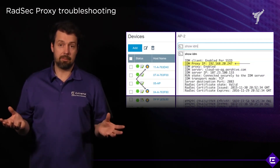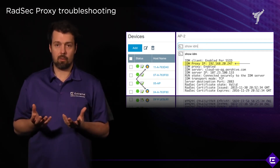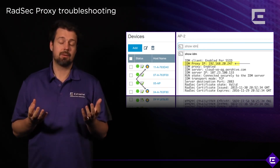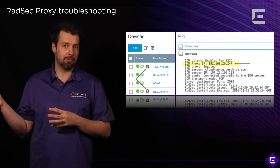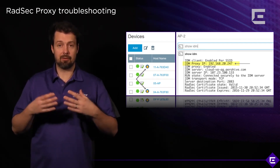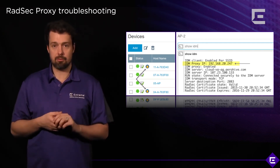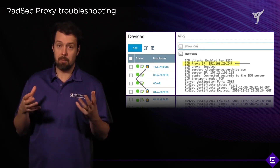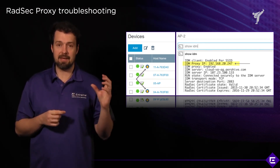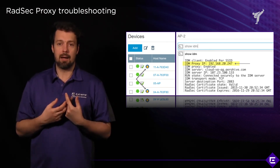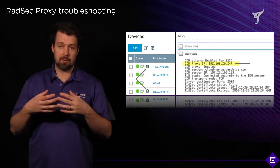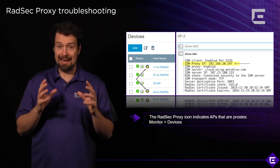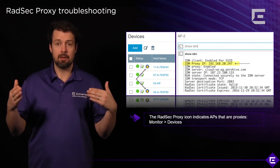For troubleshooting a PPSK deployment, there are two common scenarios: the RATSEC port is not open between your access point and Extreme Cloud IQ, or the certificates used to protect the connection are no longer valid. In the Extreme Cloud IQ monitor interface, RATSEC proxy APs are indicated by a database icon. You always have at least two RATSEC proxies — two per management subnet. The icon confirms the device has been elected as a RATSEC proxy and has built a secure tunnel to Extreme Cloud IQ.